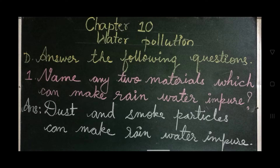Question number D: Answer the following questions. Number 1 — Name two materials which can make rainwater impure. Answer: Dust and smoke particles can make rainwater impure.